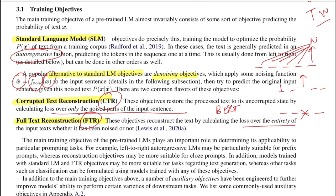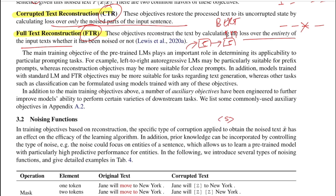For FTR, you calculate the loss over the entire input text. For example, in a sequence-to-sequence architecture with an encoder and decoder doing a translation task, the input in English comes in, you get a thought vector, and in the decoder you decode word by word calculating loss for each word. Similarly, you can induce grammatical errors in an input sequence and in the decoder regenerate the corrected version. For language models starting with a start token, a noisy function deletes every element leaving just the start token, and from that you regenerate the original input — also an example of FTR.